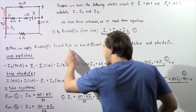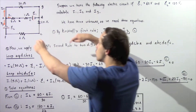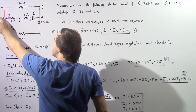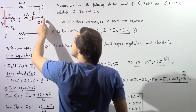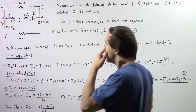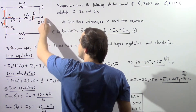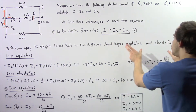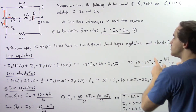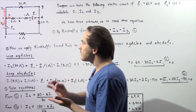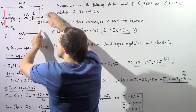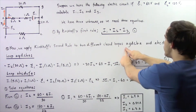Now we apply Kirchhoff's second rule to two different closed loops. Closed loop number one begins at position A, goes to G, D, C, B, and back to A. The second closed loop begins at point A, goes to B, C, D, E, F, and back to A. The current through the upper section is I2, through the middle section is I1, and through the lower section is I3.